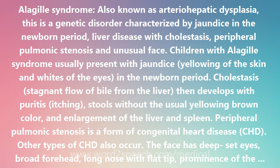Children with Alagille syndrome usually present with jaundice — yellowing of the skin and whites of the eyes — in the newborn period. Cholestasis, the stagnant flow of bile from the liver, then develops with pruritus (itching), stools without the usual yellow-brown color, and enlargement of the liver and spleen.